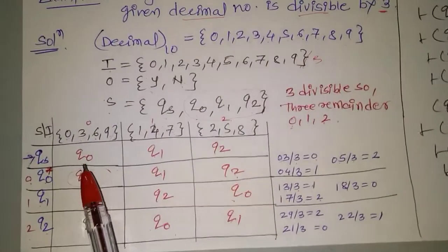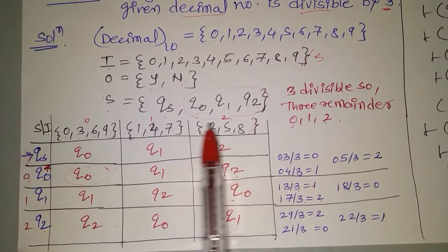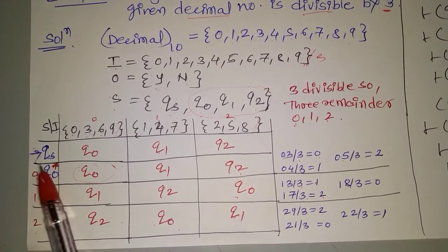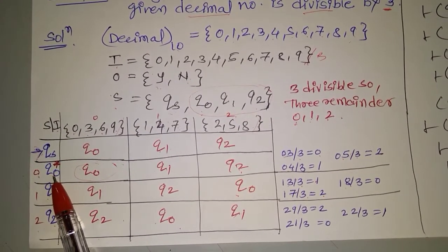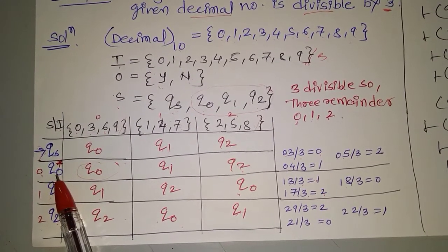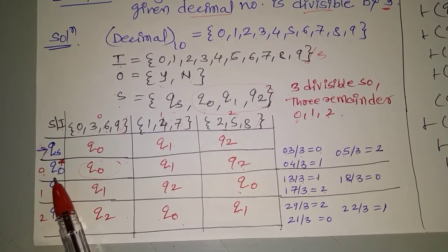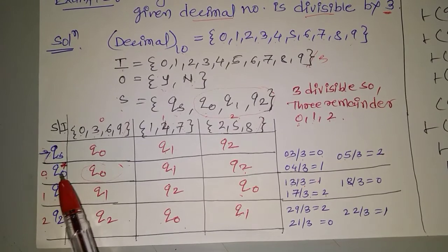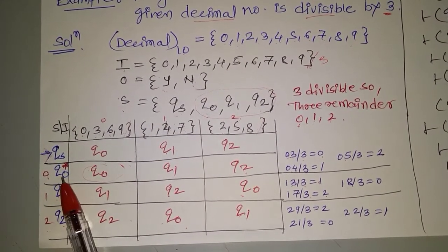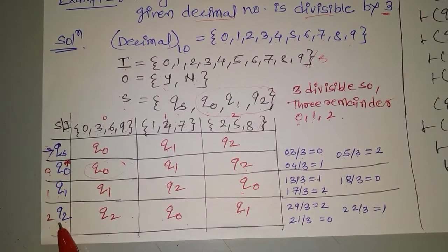This is the structure of the state table. S means state and I means input alphabets. Qs is the start state, denoted by an arrow. Q0 is the final state, denoted by a star symbol. Why is Q0 the final state? Because Q0 is denoted by remainder 0, and remainder 0 means the input is finally accepted and divisible by 3.